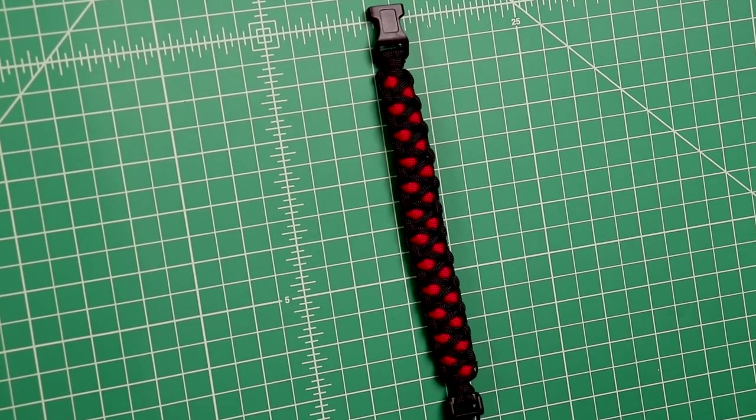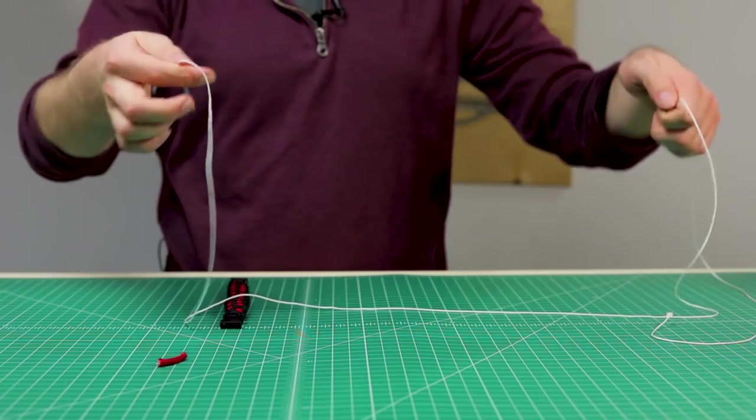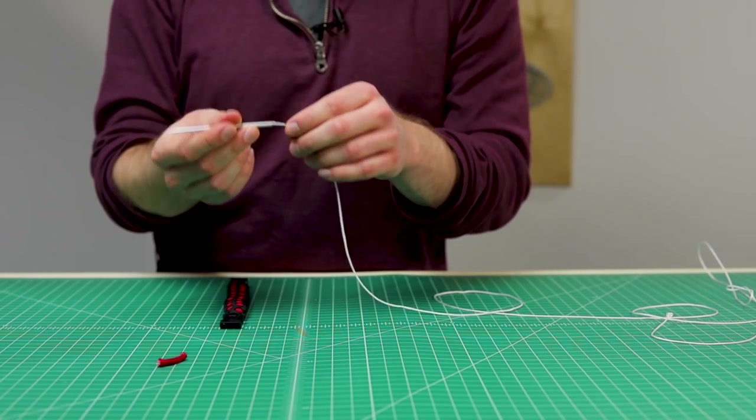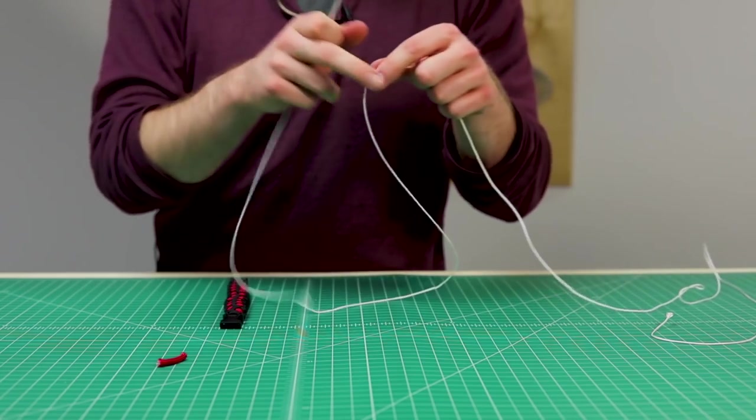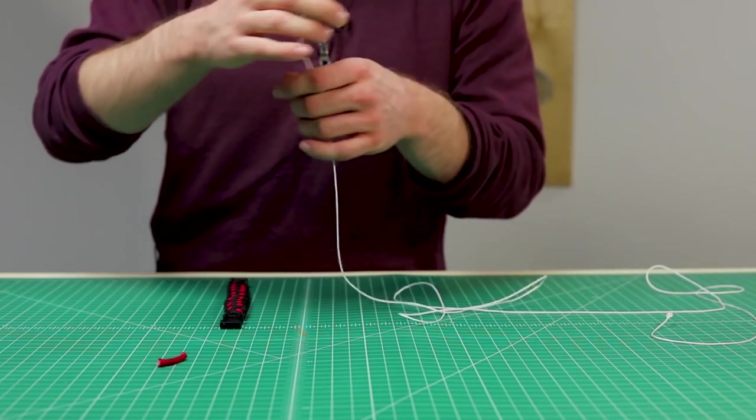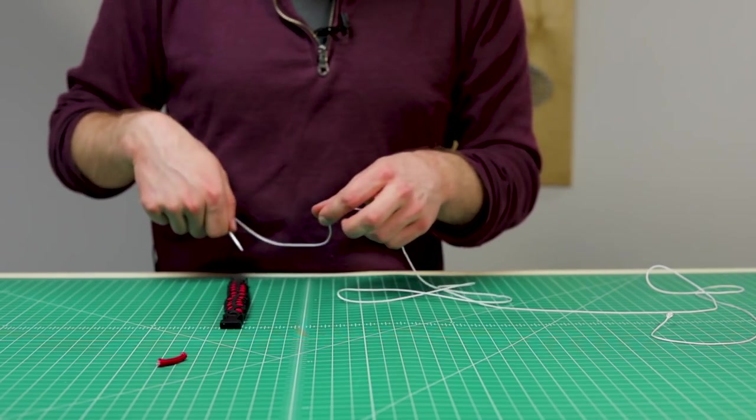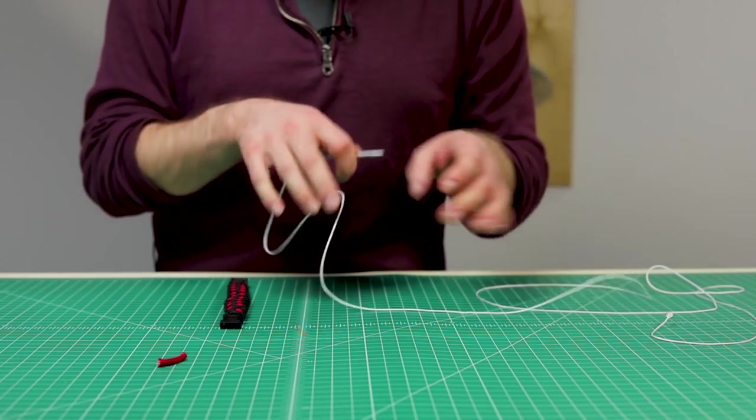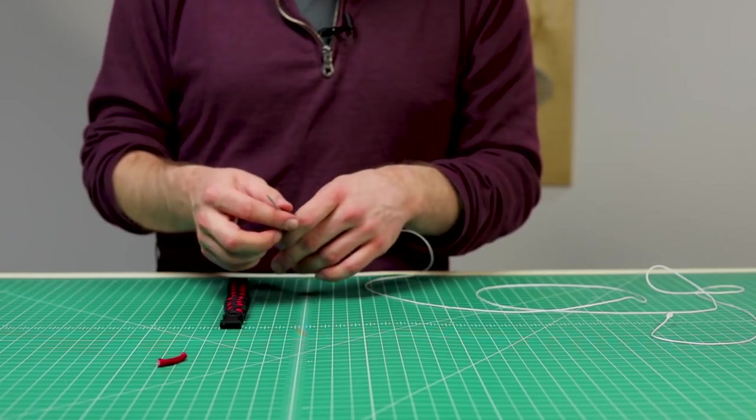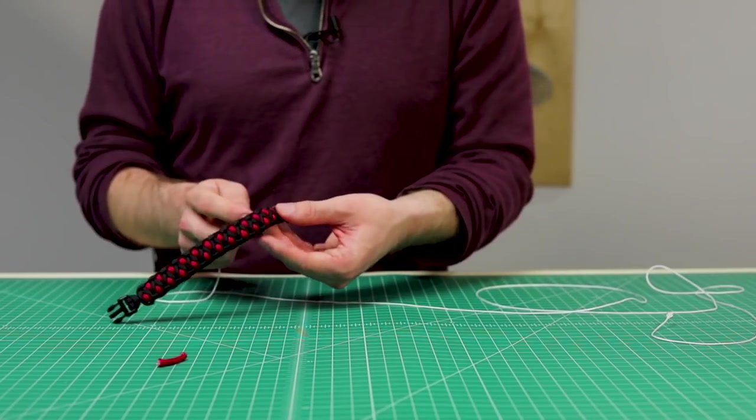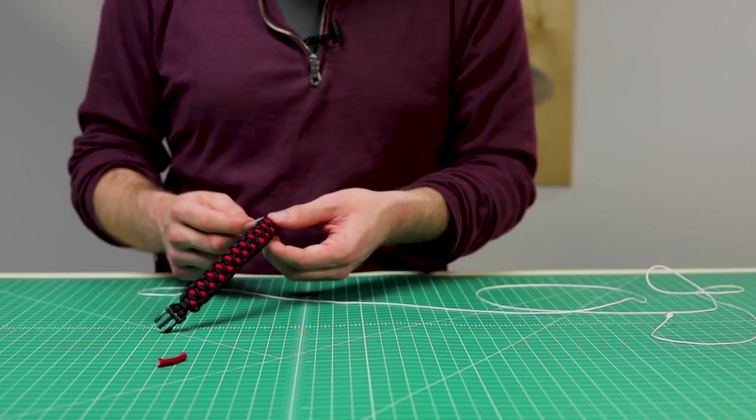So the next part of this bracelet is to bring the micro cord into it. I've already put some micro cord into my fid. You will need anywhere from two to four feet depending on the length of your bracelet. The full stitching, which is where you go through and back, is going to take about four feet. We're just doing a half stitch method so we're only going to need about two. To get started with that you're going to find either of your ends.